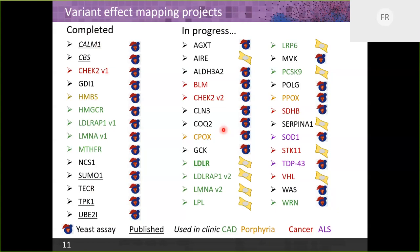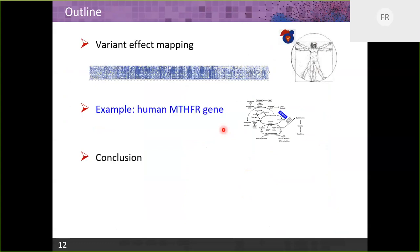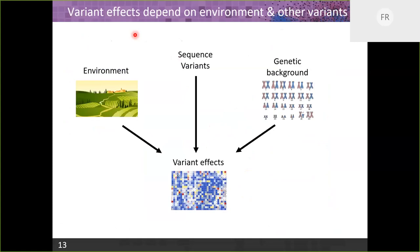I'm happy to take emails from people later if there's a gene that interests you — we'd love to collaborate. The human MTHFR gene — methylene tetrahydrofolate reductase — is the example I'm excited about because of this idea: having made a bunch of maps, we hadn't fully tackled the challenge of modeling not only the functional effect of each variant, but how that variant effect changes in different environments and genetic backgrounds. I wanted to begin to tackle that here with the MTHFR project.